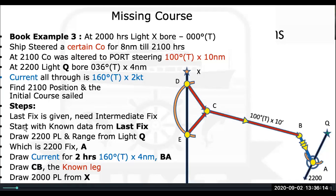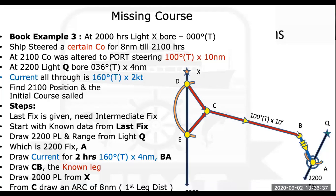Because the initial leg is missing, the final legs are given, so we start from the final. If the initial leg is given we start from initial; if the final leg is given we start from final. So here the final leg is given, so we start from the last fix. From the last fix we apply the current for 2 hours and we get point B. From B we put the second leg, 100 degrees for 10 miles, and we get point C.